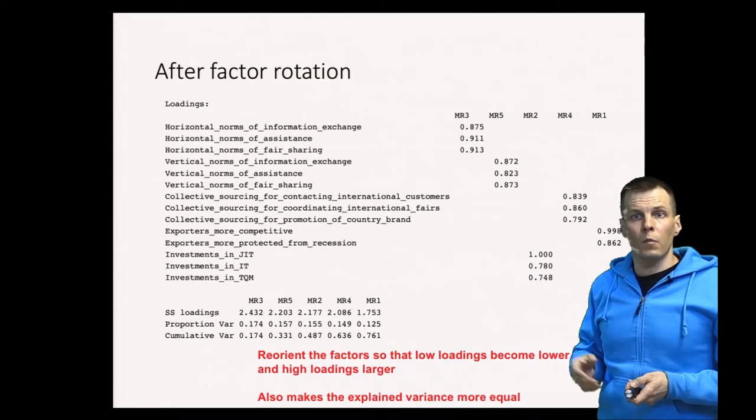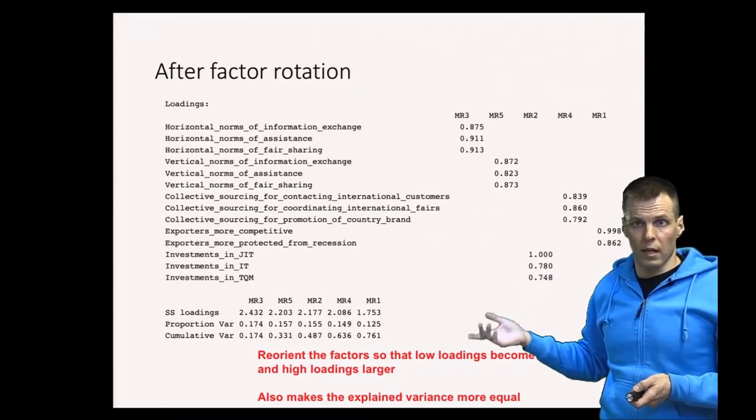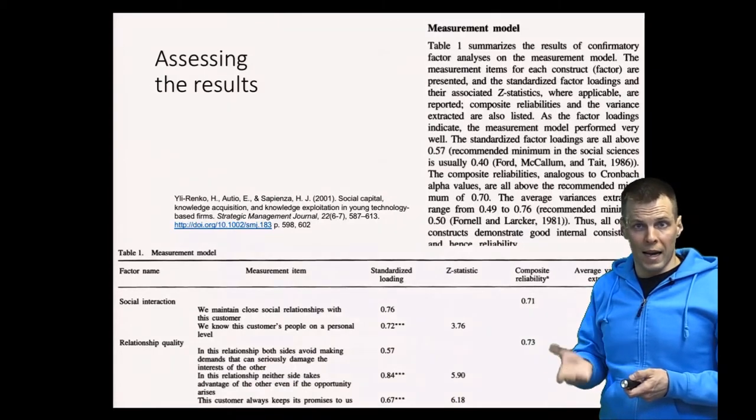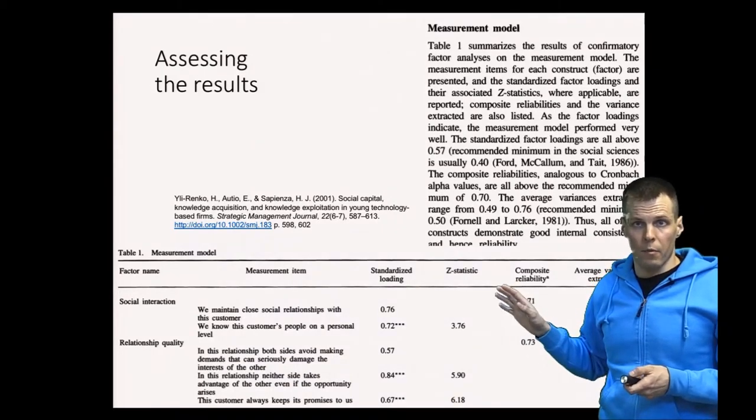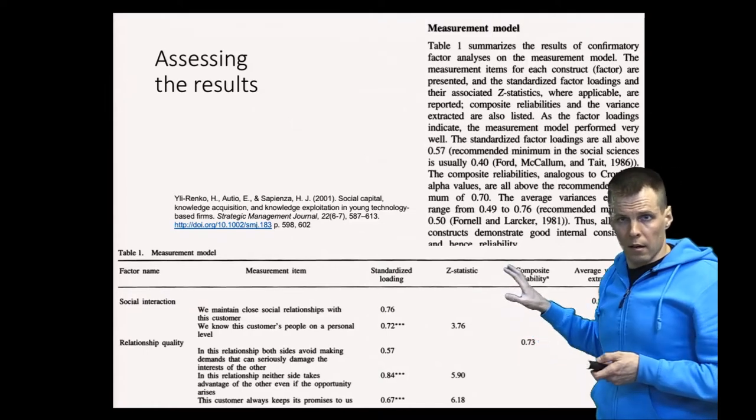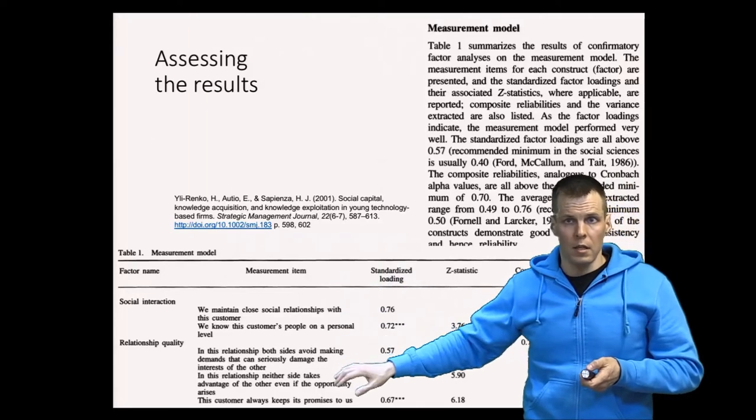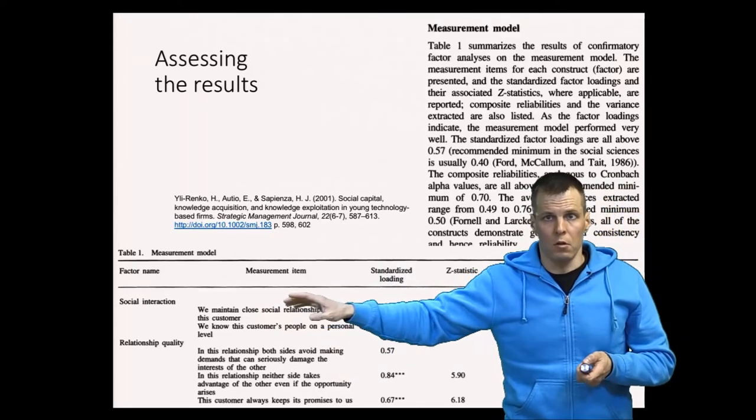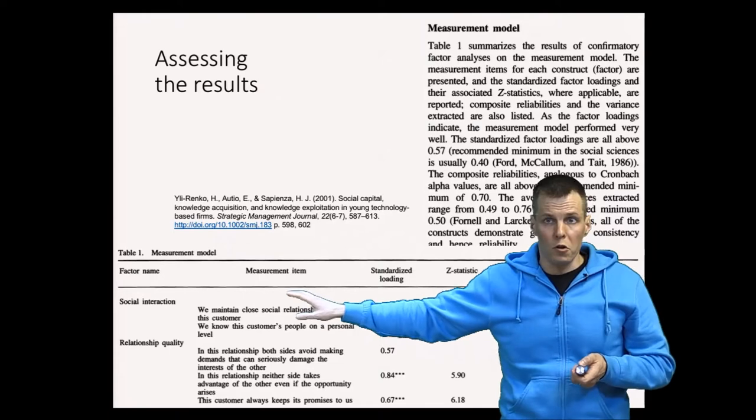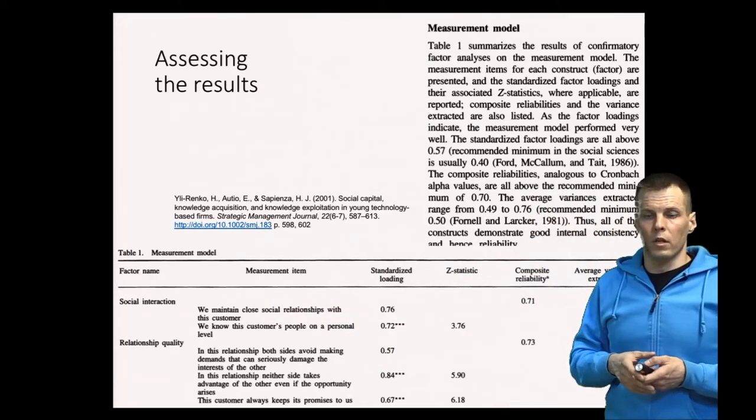Another thing that we look at from these factor loadings is their magnitude. So that's what we do when we assess the results, and this is an example from Yleringer's article. They have a table of factor loadings, they have the measurement items, they have labeled the factors. So usually you label the factors with the constructs' names, and then you look at the loadings.